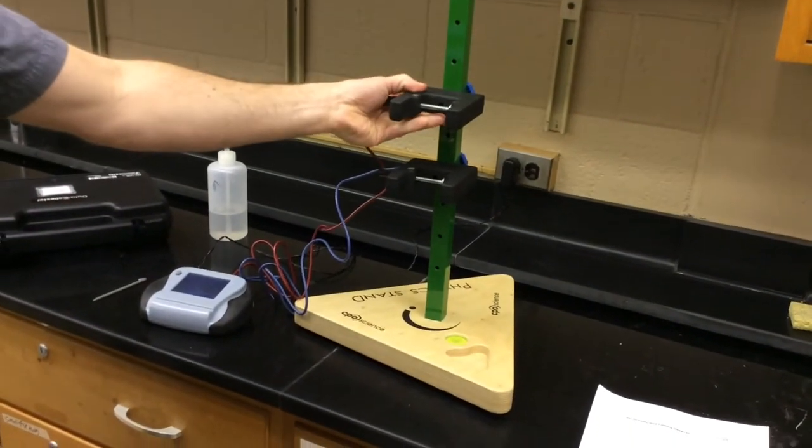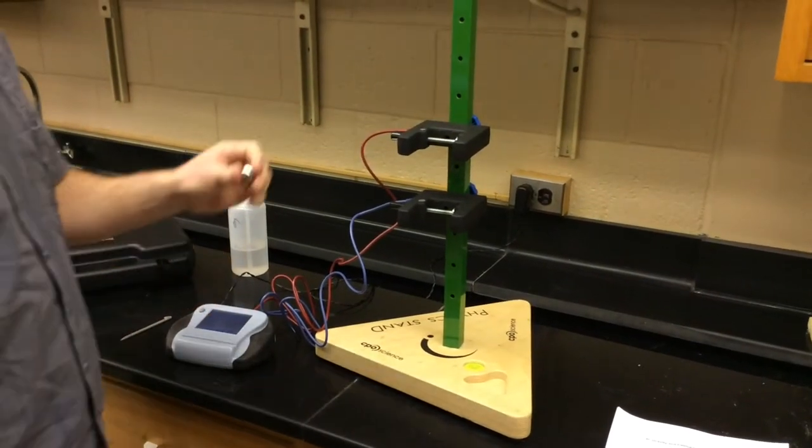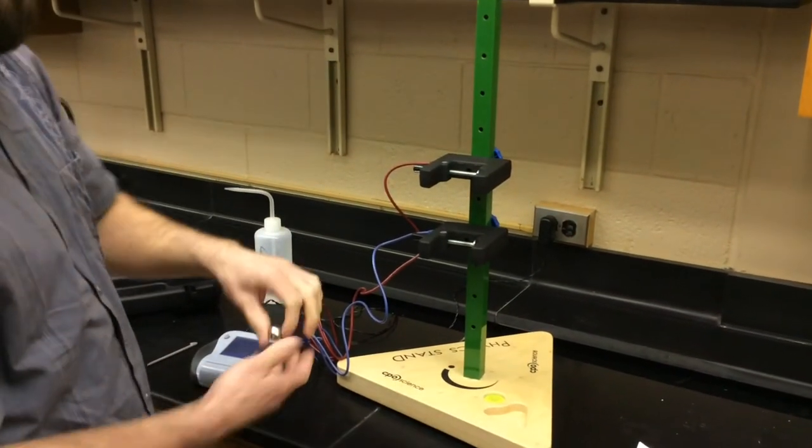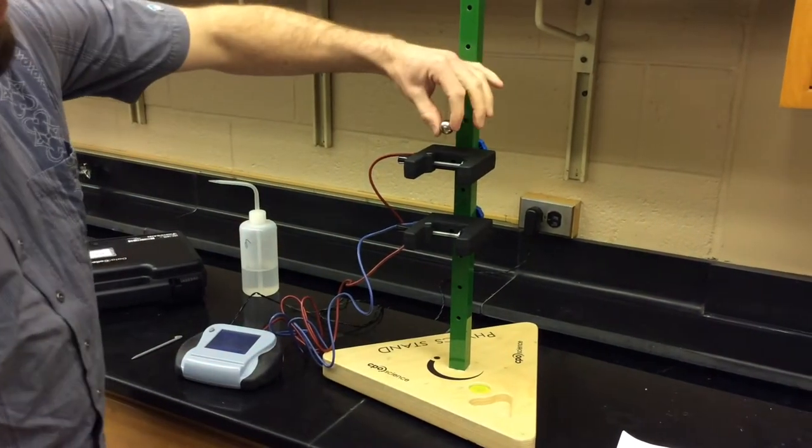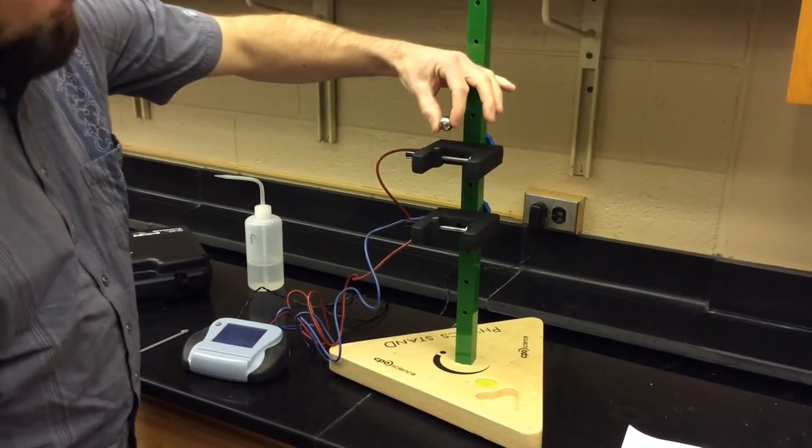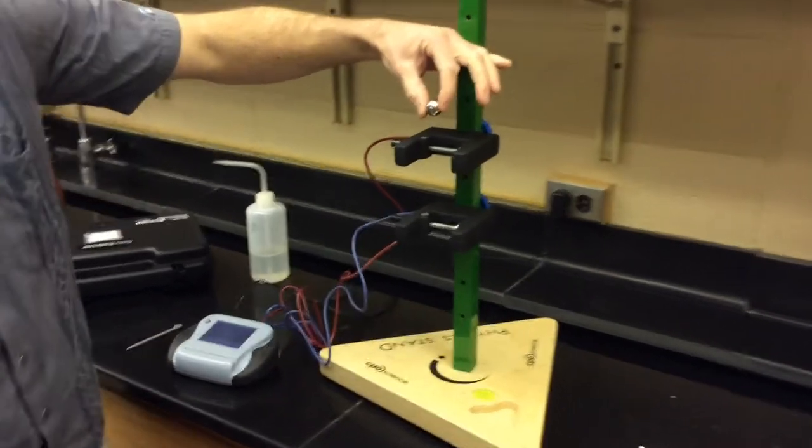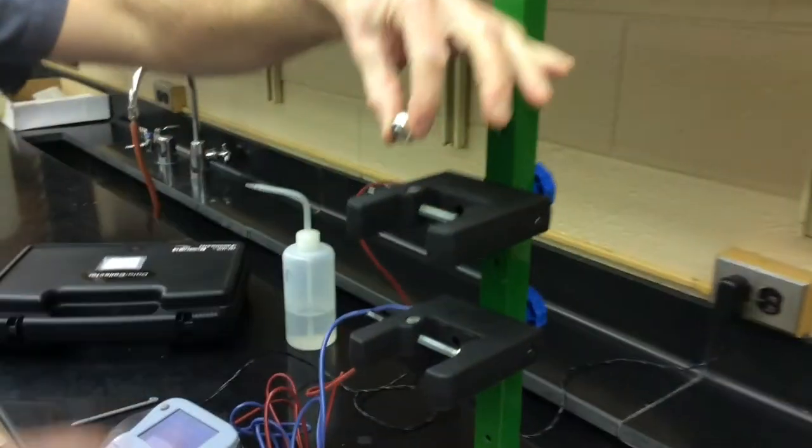When you're doing this lab, there's a little bit of technique, and it might be a little annoying at first. With this first photo gate at hole number six, you want to hold the marble at hole number seven. You might have to look down and see that it's lined up and get an idea of where your hand is.